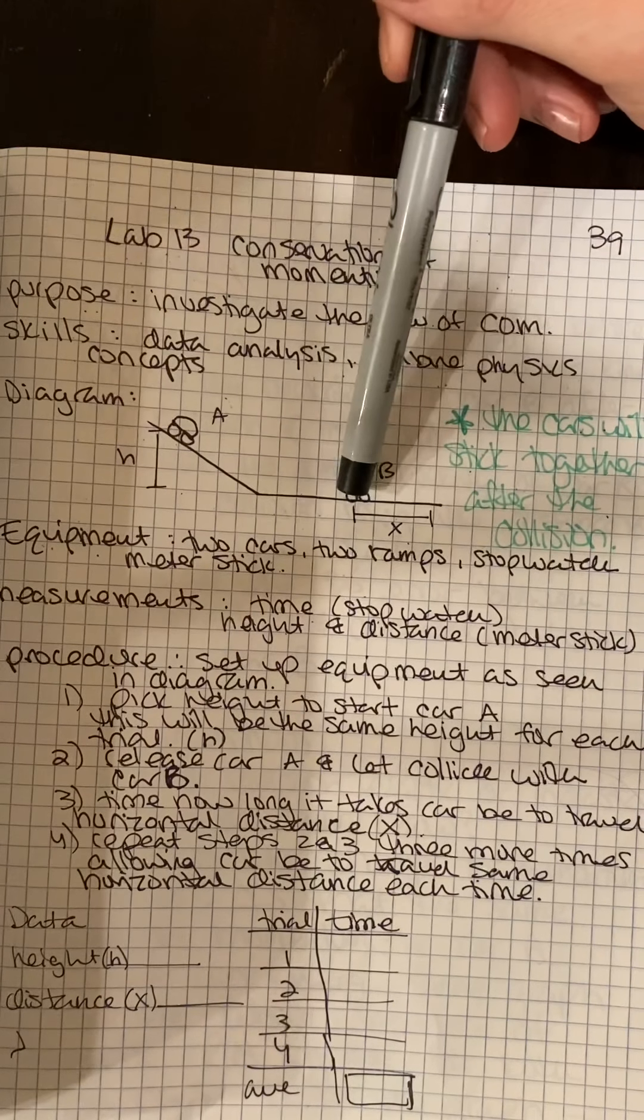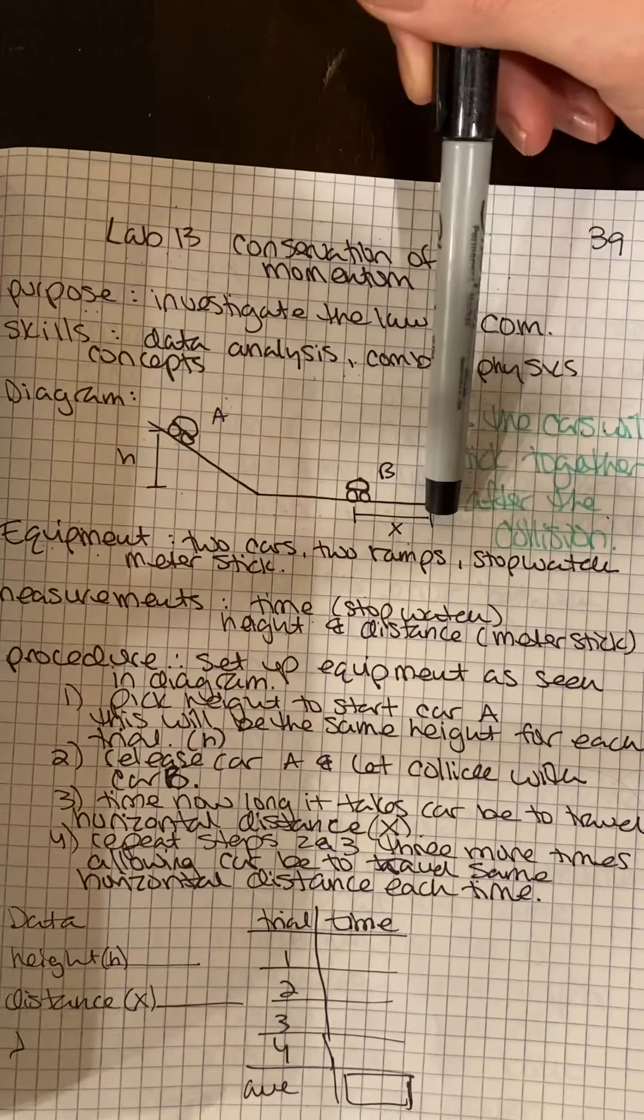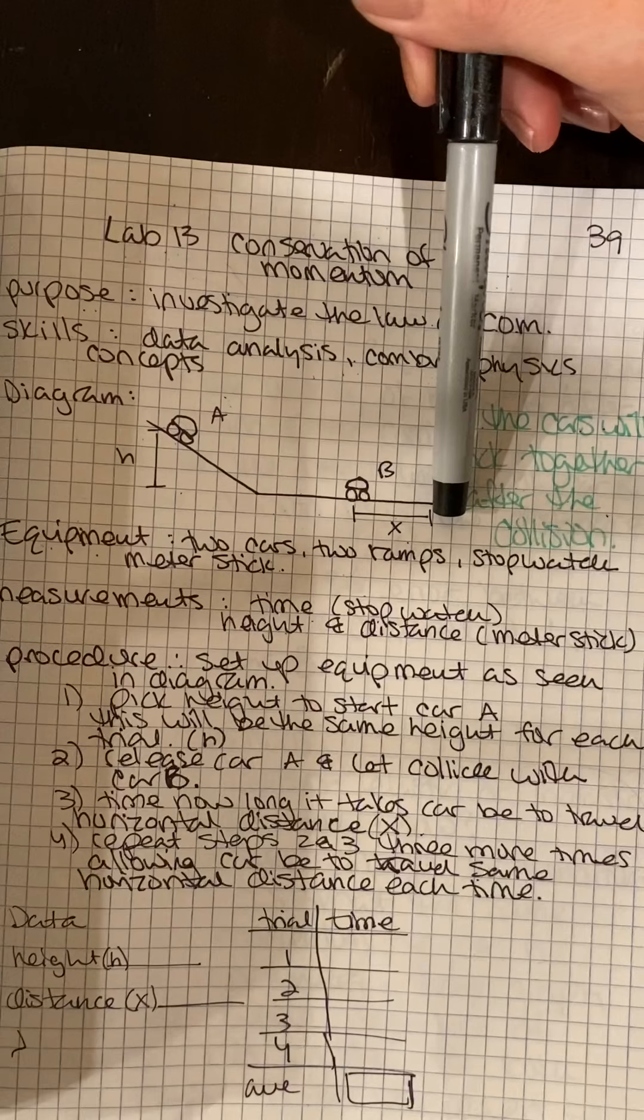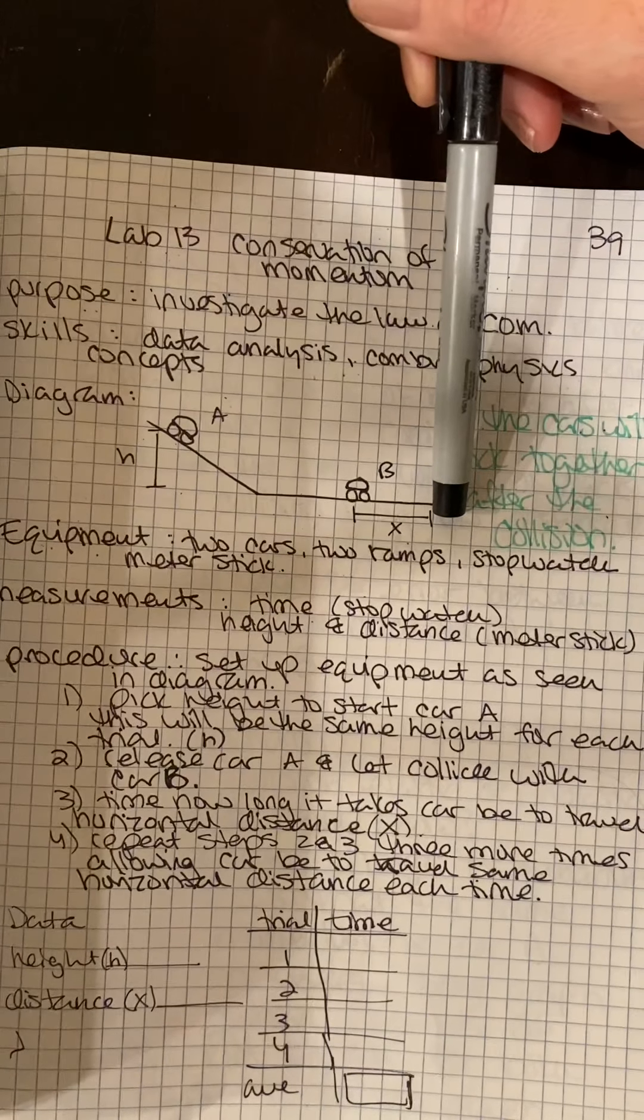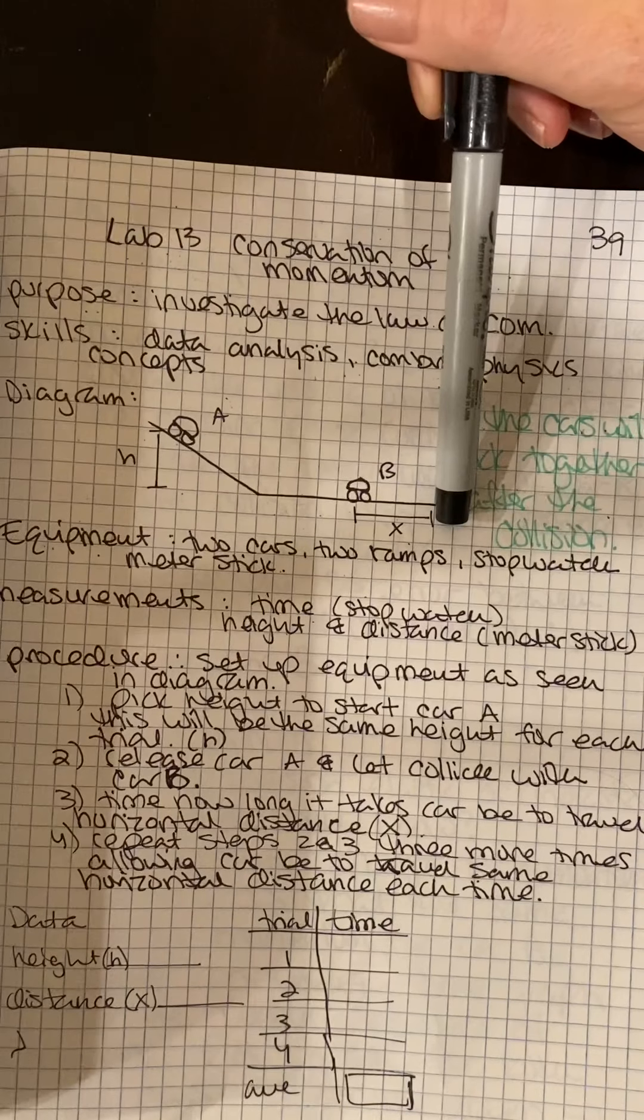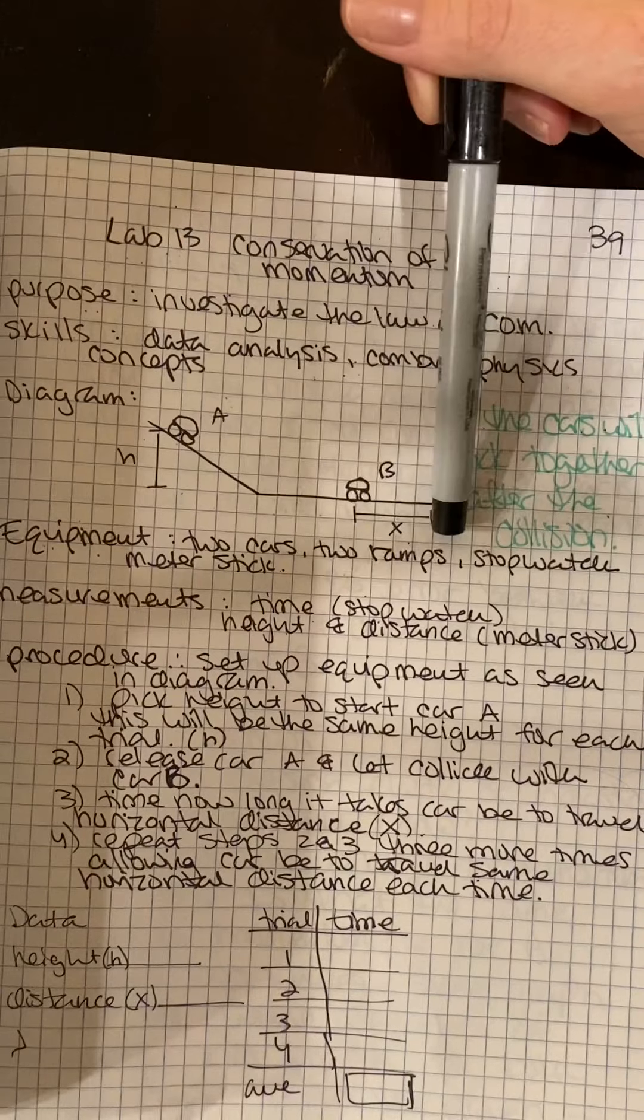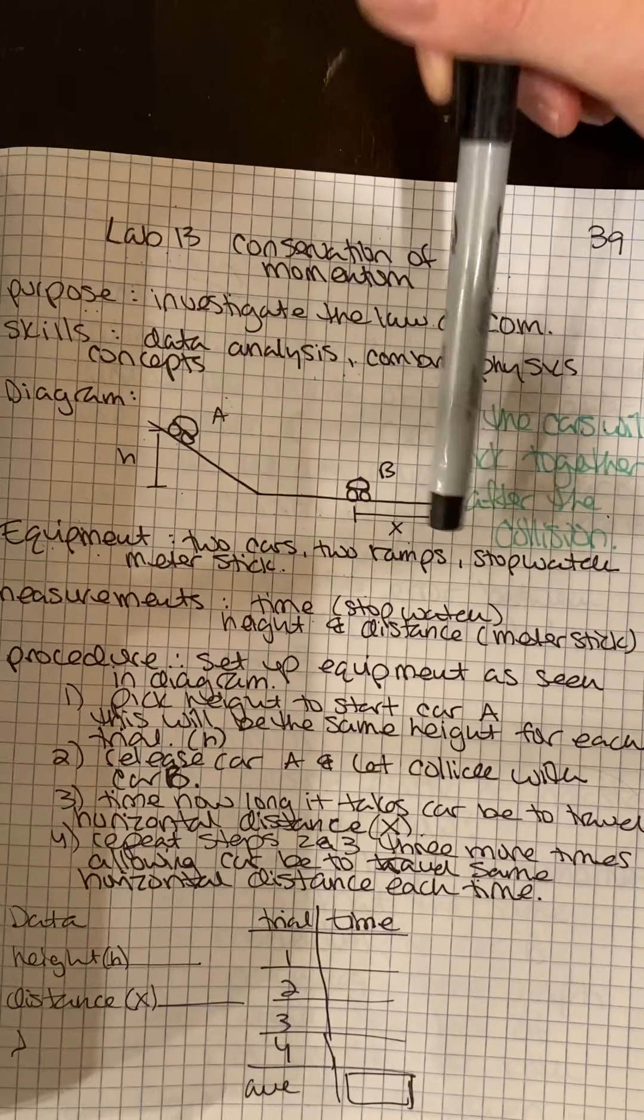So once this car starts moving, we're going to start our time. And then you stop your time once it's reached this distance that you have identified. So we're going to do this four times. The data we're going to collect is just the time it takes to go this horizontal distance using our stopwatch.